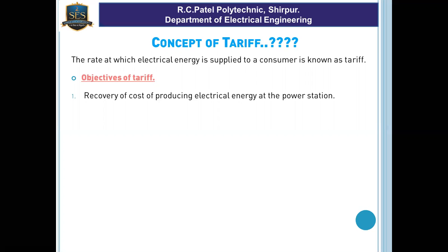The purpose and objective of tariff: first is the recovery of cost of producing electrical energy at the power station. In this process, different equipment requirements apply — the cost of generation, fuel cost, maintenance cost — these are all included in finalizing the tariff structure. This includes the process of generating, fuel, transportation, etc., as well as salary, maintenance, and equipment damage.